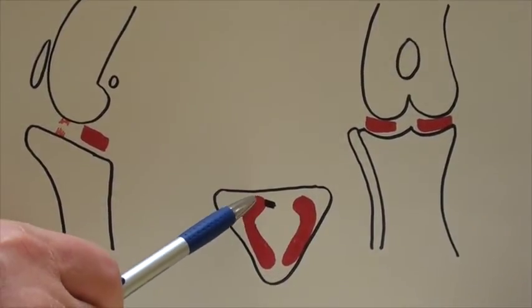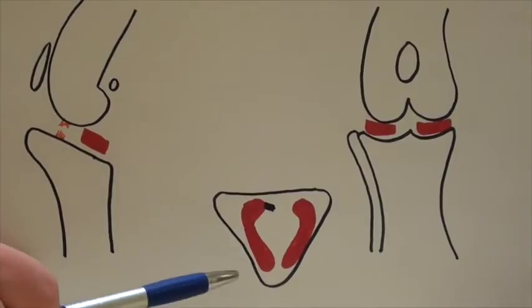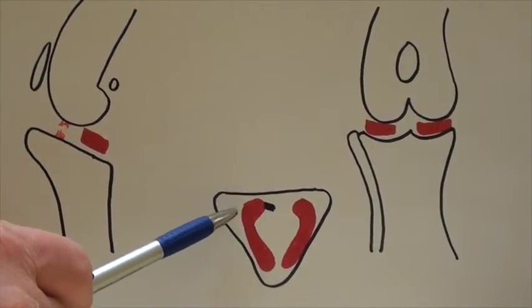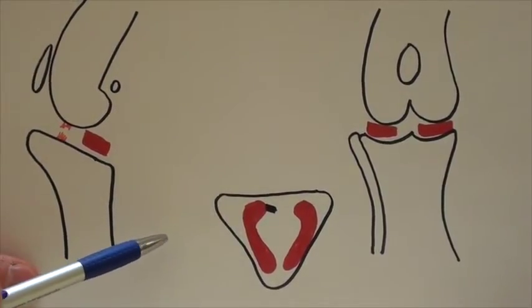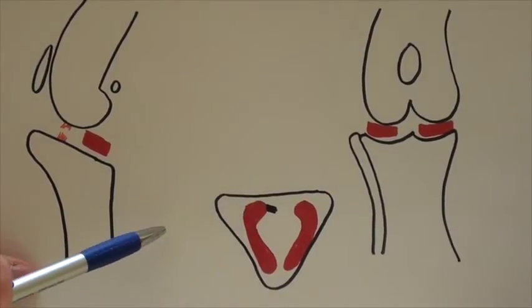The inner meniscus, however, is attached to the tibia with a ligament. So as the femur slides backwards, it comes over this back portion like a steamroller, and many times will tear the back portion of the meniscus.